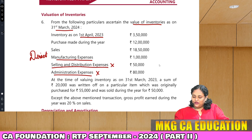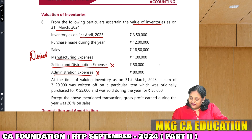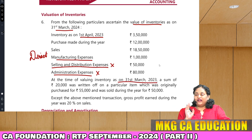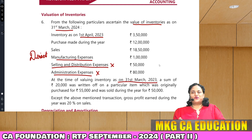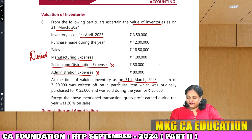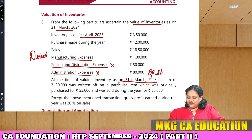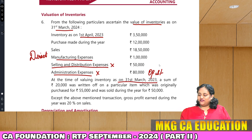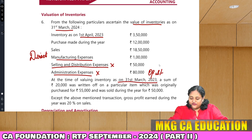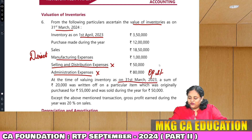At the time of valuing inventory as on 31st March 2023 — that is last year's closing stock, meaning this year's opening stock — a sum of 20,000 was written off on a particular item which was originally purchased for 55,000 and was sold during the year for Rs. 50,000.